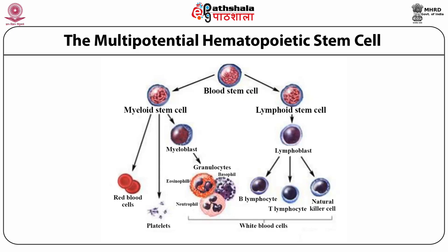The development of blood cells is called hematopoiesis. Most cells of the immune system originate from a common hematopoietic stem cell. Hematopoiesis begins in the early yolk sac. During embryogenesis, this process moves to the fetal liver, fetal spleen, and then the bone marrow of the neonate and adult. Hence, the common multi-potential hematopoietic stem cells are found in the fetal liver, fetal spleen, and bone marrow, where hematopoiesis continues throughout life.